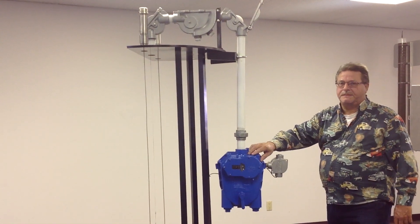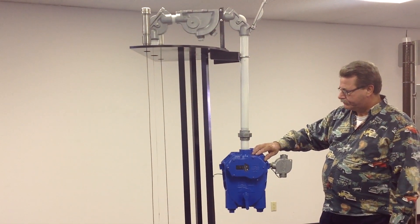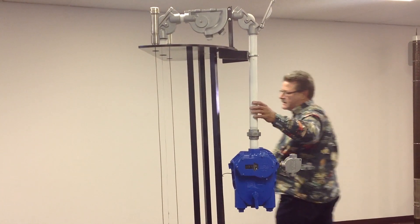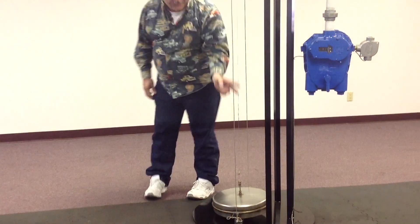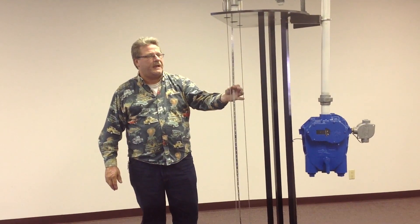This is the GSI 2570 Deluxe Gauge. This particular unit consists of the float, the bottom anchor, the guide wire, and tape.